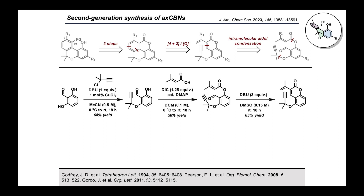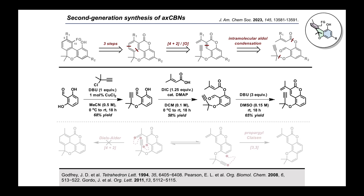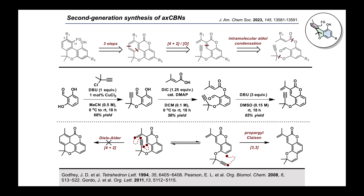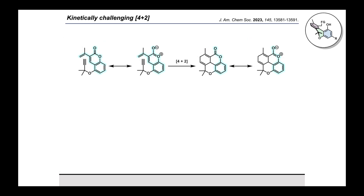We elected to develop this synthetic route using commercially available 2,6-dihydroxybenzaldehyde as our starting material. We successfully constructed the model Diels-Alder precursor in three steps via copper-catalyzed dimethylpropargylation, DIC-mediated phenol acylation with 3,3-dimethylacrylic acid, and intramolecular vinylogous aldol condensation. It was our hope that the vinyl coumarin dimethylpropargyl ether would then undergo an intramolecular thermal [4+2] cycloaddition, but we found instead that the substrate selectively undergoes a propargyl Claisen rearrangement, yielding an undesired pyranocumarin product.